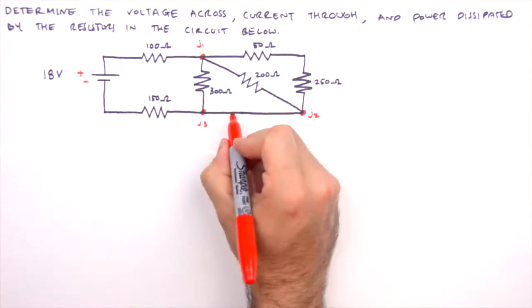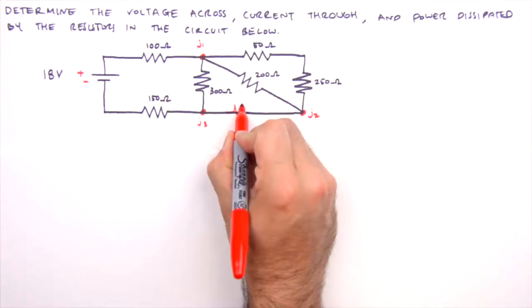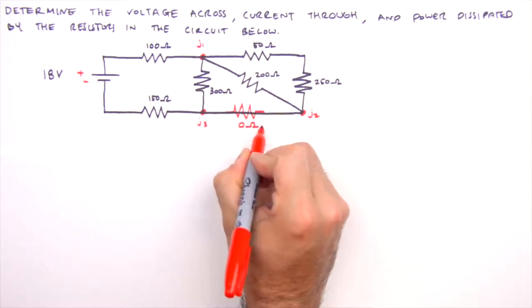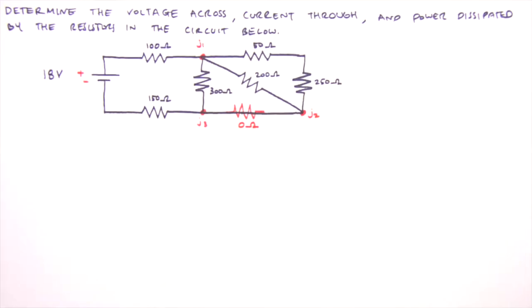Now, before we take a crack at this circuit, I recommend that we replace this empty leg with a dummy resistor, a zero Ohm placeholder that will make our analysis a little simpler. This step isn't necessary for seasoned veterans of circuit analysis, but I find it to be helpful for beginners.